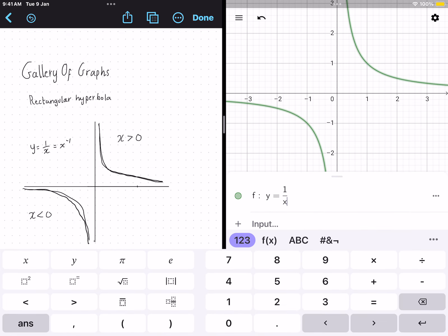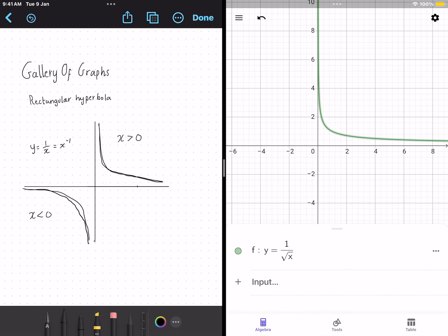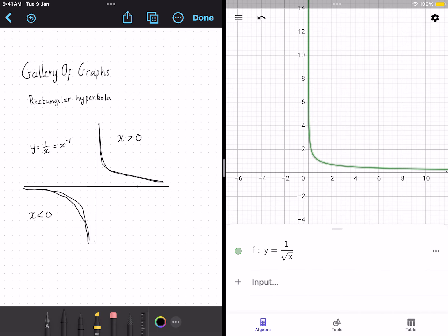Now, what if we square root the x? So we do root x. We can see that we lose one of the graphs and we get half of the graph. This is the square root of the equation.